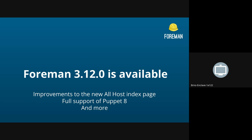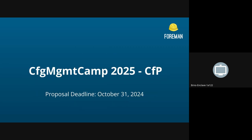The great news is that Foreman 3.12 is available. New features include improvements to the new All Hosts index page and full support for Puppet 8, and of course more. If you want to know more about the new release, head over to the Foreman page. About the Config Management Camp call for papers — that's going to be open until the end of October, and the team is looking for open source topics related to infrastructure. They accept a broad range of proposal types ranging from ignite talks to presentations and workshops, so if you have a topic in mind, consider submitting a proposal.